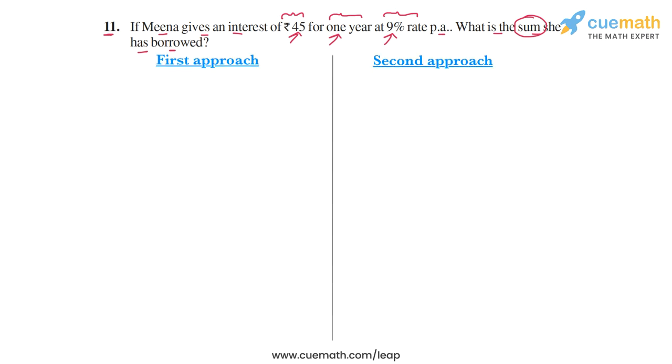In the first approach, we will use the unitary method. Let's see how the unitary method can be applied to this problem. We are given that the rate of interest that applies here is 9% per annum.